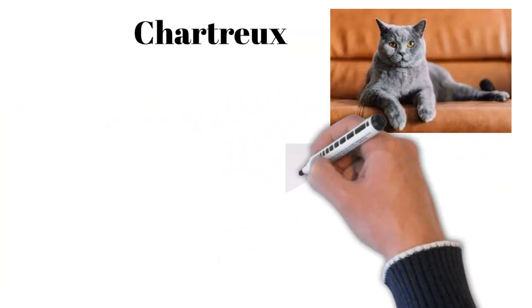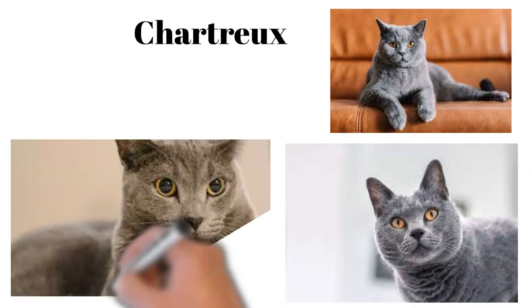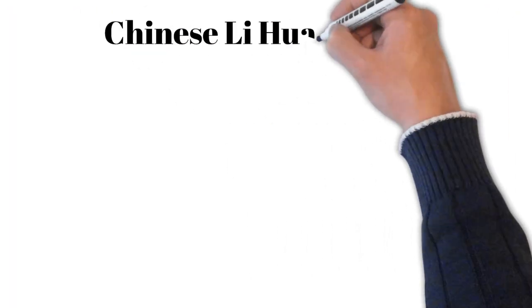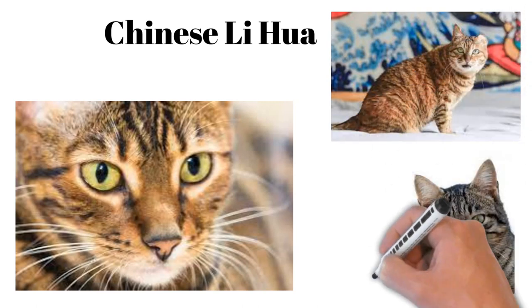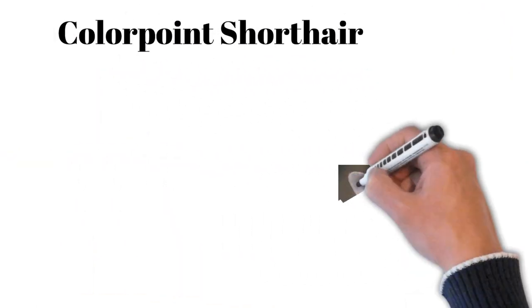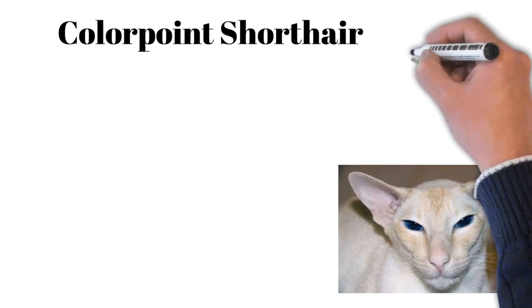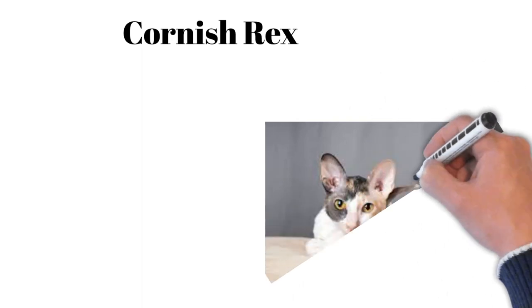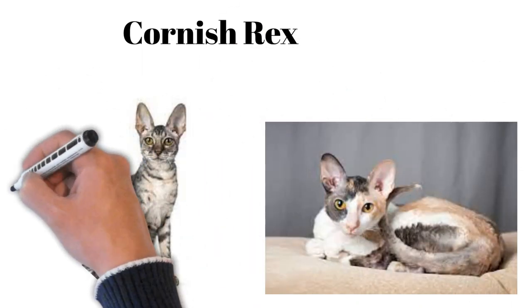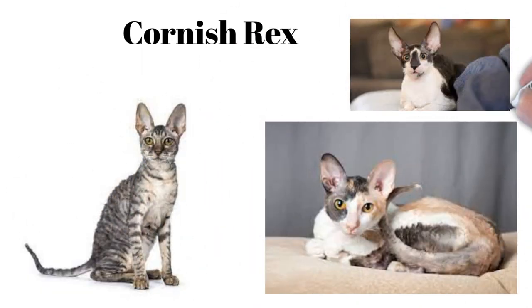Chartreux: quiet, loyal, with a robust build and blue-gray coat. Chinese Lihua: native to China, loyal, gentle, good hunter. Colorpoint Shorthair: Siamese build with point colors, vocal, affectionate, energetic. Cornish Rex: curly coat, slender body, active, adventurous and loves humans.